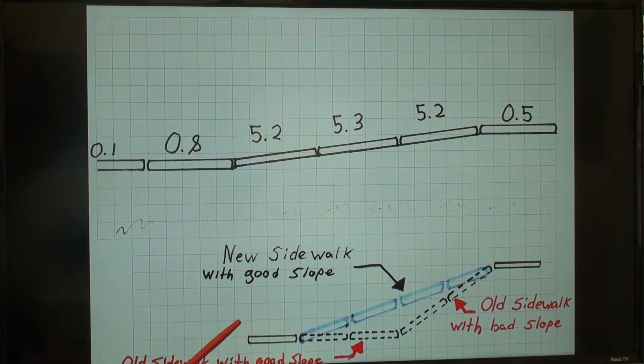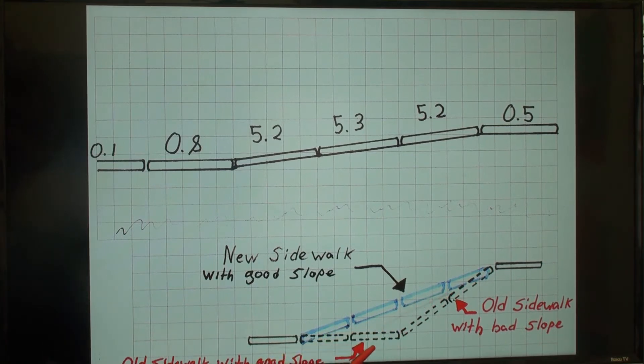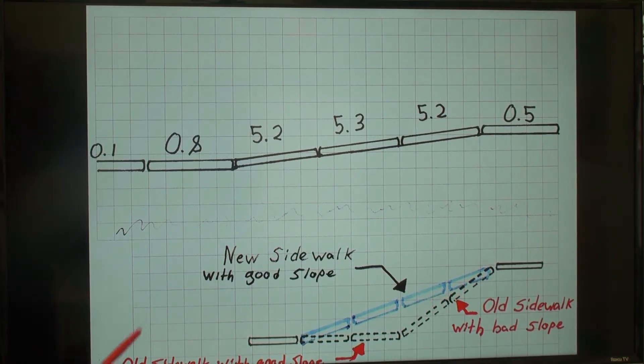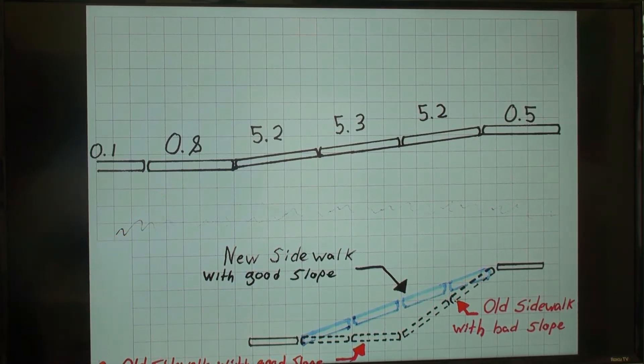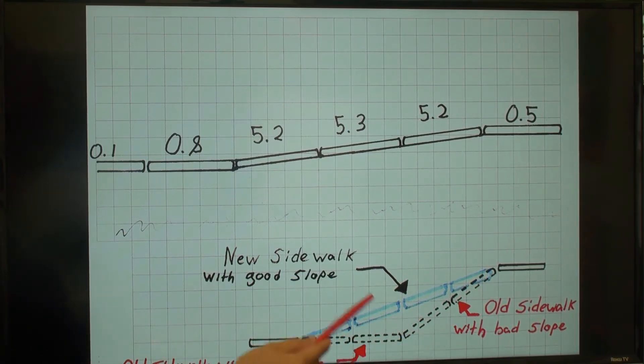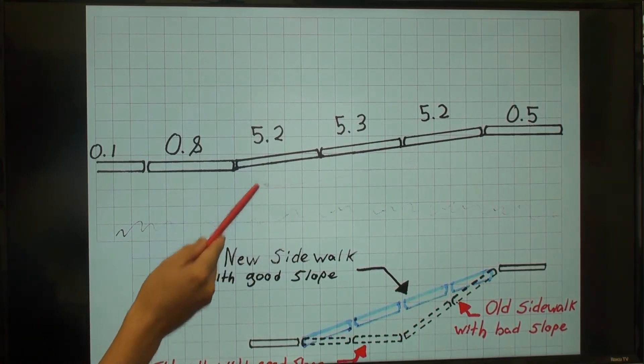The resulting effect would look like this. The old sidewalk panels with good slope, like the 0.8% slope panel, are combined with these old panels with bad slope, like these 5% plus panels, to make a good sloped sidewalk.